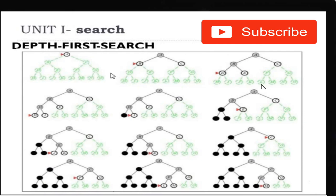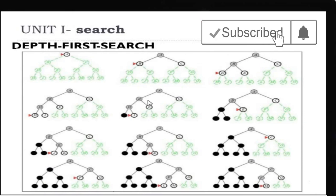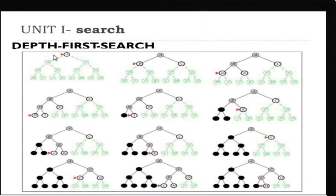Now, if you look at this diagram, this is the depth first search algorithm order diagram. Here, this is our state space search. First, the root node is expanded. Then the deepest node — deepest node is B. Then the deepest node of B is called D. My goal node is L. I am not the goal node, so this one is a dead end.